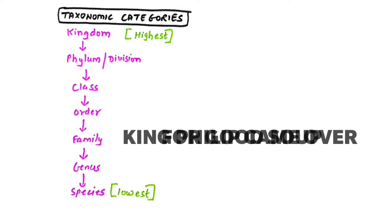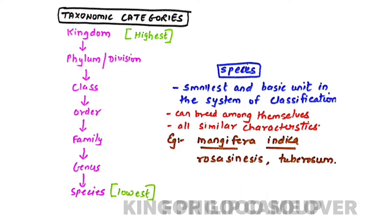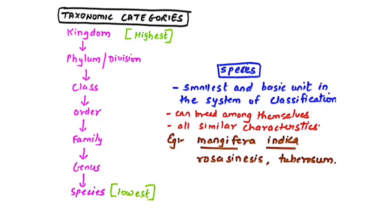Species is the smallest and basic unit in the system of classification. You cannot classify any animal further beyond this. The most important characteristic of species is that these animals or plants can interbreed among themselves and all have similar characteristics — for example, Mangifera indica, Rosa sinensis, and Solanum tuberosum are different species.